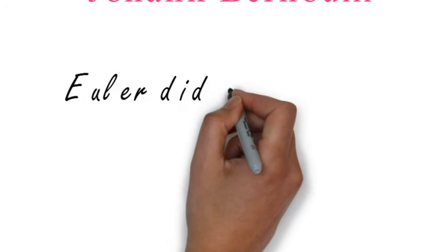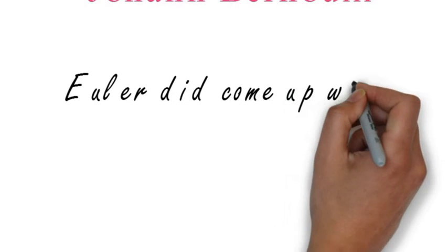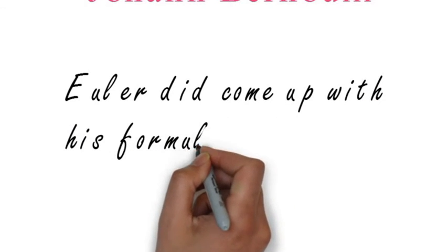All Euler did was took Bernoulli's complex logarithms and wrote up the complex exponential. He came to what we know today as Euler's formula only through algebraic means. He has never seen what I've just shown you.